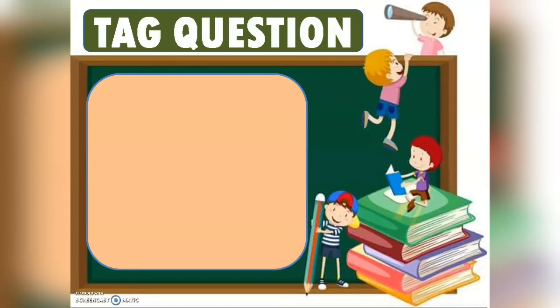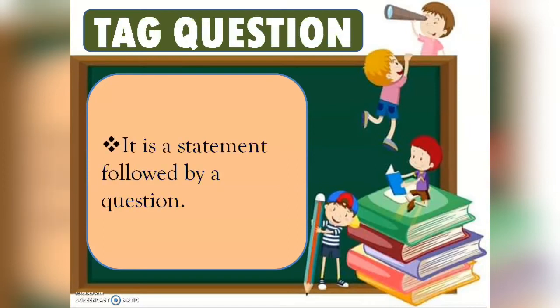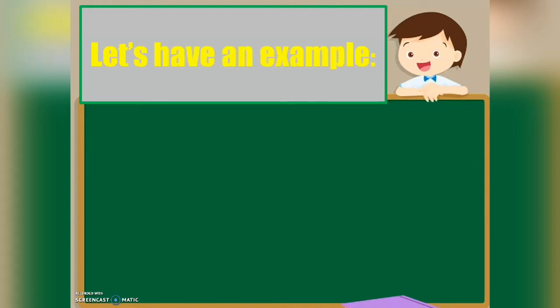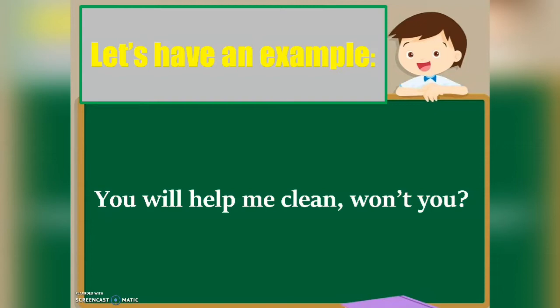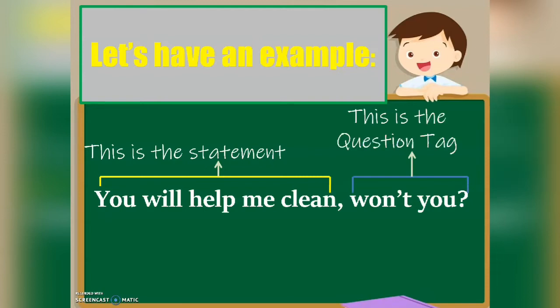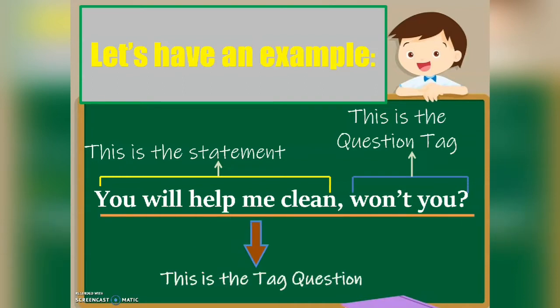When we say tag question, it is a statement followed by a question. For you to visualize what I'm talking about, let's have an example: 'You will help me clean, won't you?' 'You will help me clean' is the statement, while 'won't you' is what we call a question tag. When we combine these two, we will come up with a tag question.